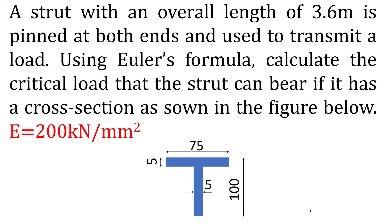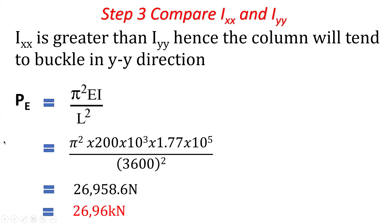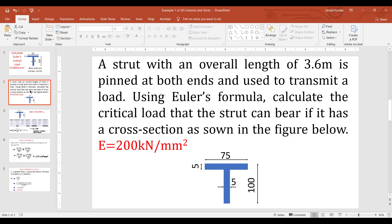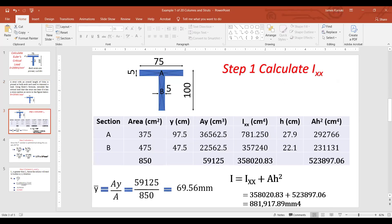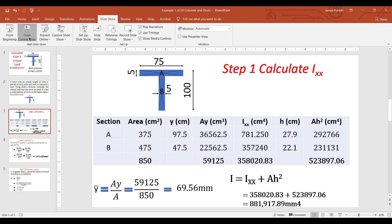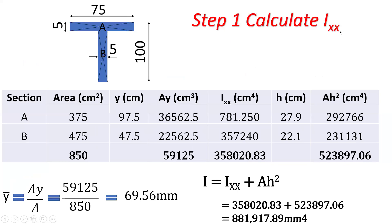Let's go through the steps of solving the question. The first step is to calculate Ixx. So we are going to calculate Ixx and then calculate Iyy and compare the two. The column will tend to buckle in the direction where the I is less.